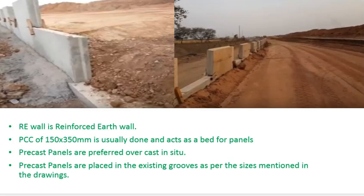First, the definition of RE wall: it is a composite structure which consists of alternating layers of compacted soil and soil reinforcement elements fixed to a wall facing. The stability of the RE wall is due to friction and tension between the backfill and soil reinforcement. The main function of the wall facing is preventing erosion of structural backfill, and the resulting structure is a coherent gravity structure that is flexible and can carry a variety of heavy loads.